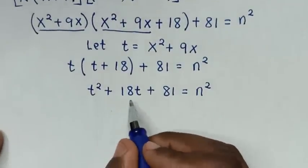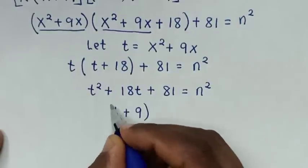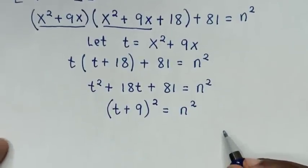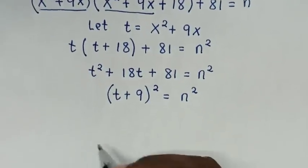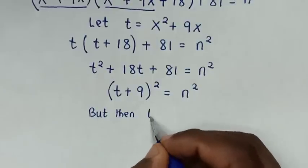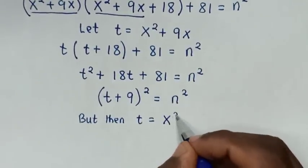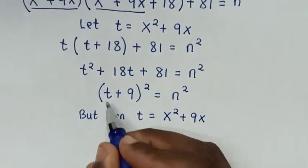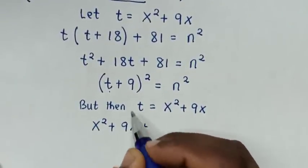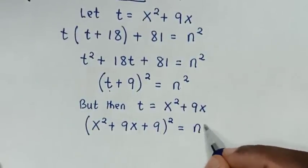Then t² + 18t + 81 is the same as (t + 9)², so (t + 9)² = n². We now recall that t = x² + 9x and substitute back: (x² + 9x + 9)² = n².